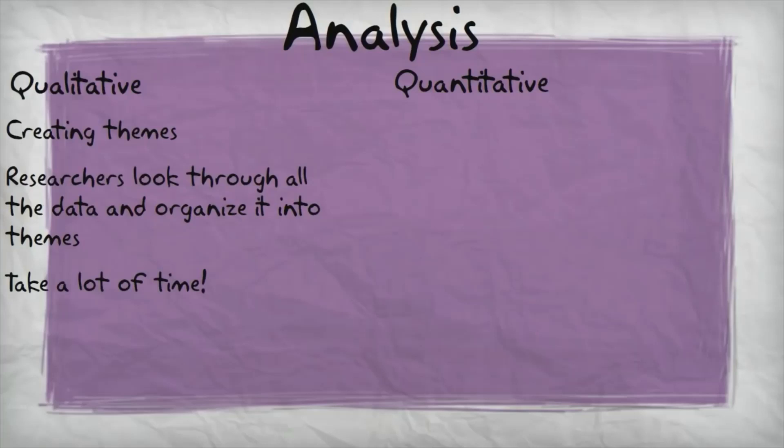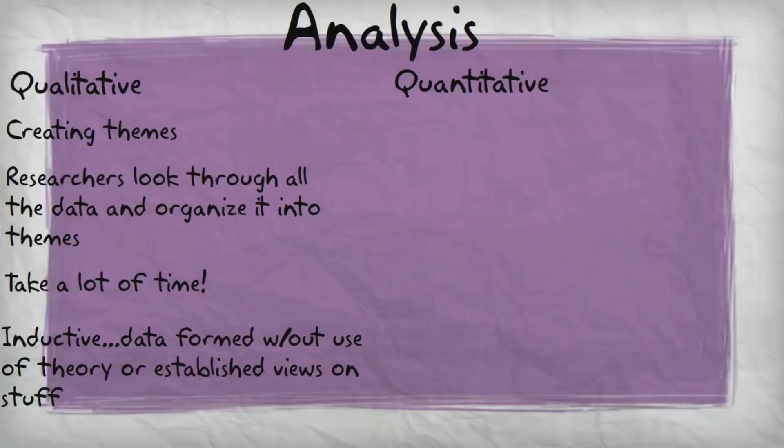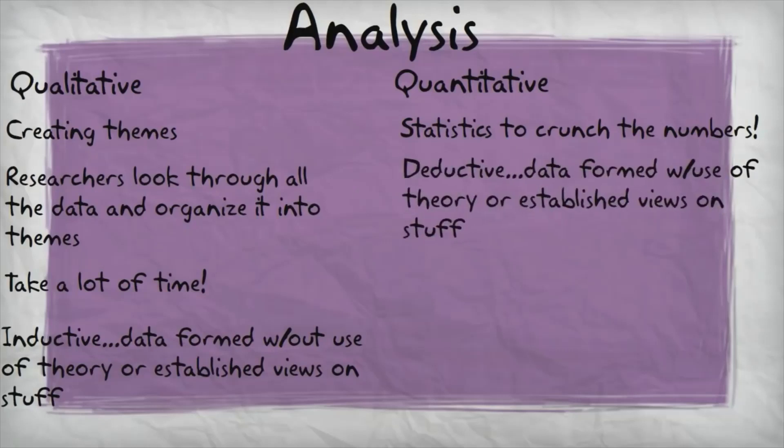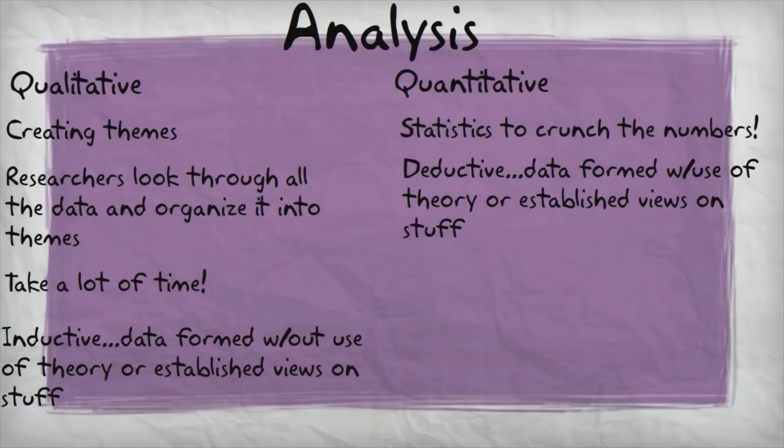It's important to note here that qualitative research is inductive in nature. That means that the research questions, the data collection, the analysis, and all that stuff is not based off of a theory or preconceived notions that the researcher has. The researcher lets the data speak for itself and form itself into themes without the bias of an existing theory or existing ways of thinking about things already. On the other hand, in quantitative research, analysis involves the use of statistics to crunch numbers and figure out what those numbers mean in terms of answering research questions. Qualitative research looks at themes. Quantitative research and analysis crunches numbers, statistics. Quantitative research is also usually deductive. It's based from existing theories and information that's already out there to help form research questions and how data is collected and how it's analyzed.